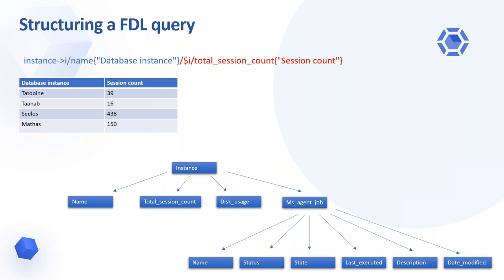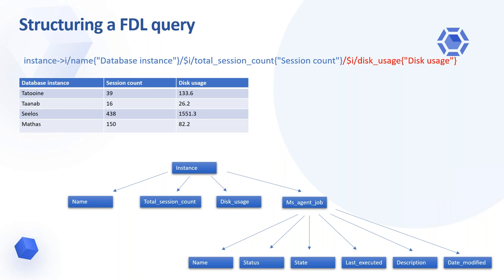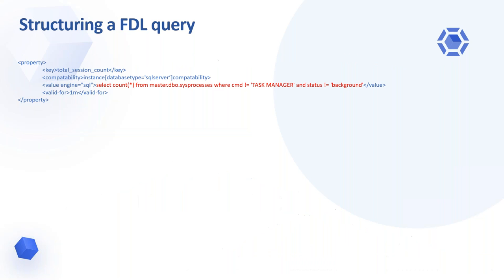We use '$i' to refer to the same instance element again when we add the column for total session count, formatted as 'session count'. Now we have joined two properties such that both the database instance name and the session count refer to the same database instance. If we didn't use this to connect the two properties, it would just be two columns that were not connected — it could be the name of one instance and the session count of another. Since we use an anchor, we open the possibility to query multiple values at once from the same node item. We can also add disk usage alongside in this query, and we get a view that contains multiple key metrics for the database instance — something that could solve our initial problem of querying and merging data from multiple database instances using the different aliases.